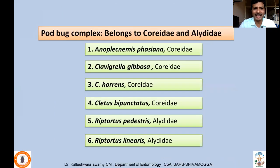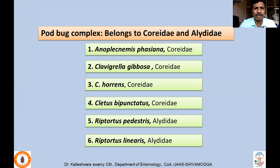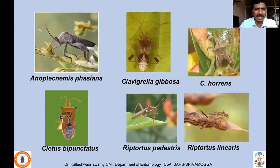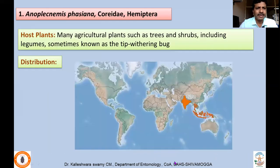These pod bugs either belong to family Coreidae or Alydidae. There are a number of species, and I'll be concentrating on a few of the major coreids and alydids, which include Anoplecnemis faziana, Clavigrella gibbosa, Clavigrella orantes, Cletus bipunctatus — all belonging to family Coreidae — whereas alydids include Riptortus pedestris and Riptortus linearis. We'll take them one by one for identification and the damage they cause.